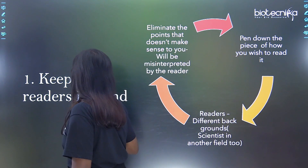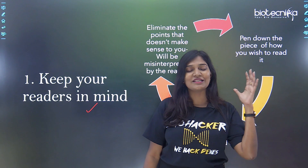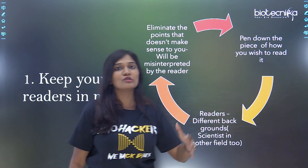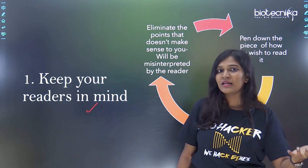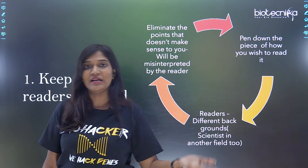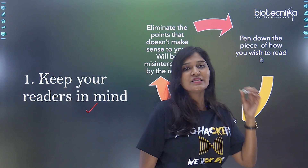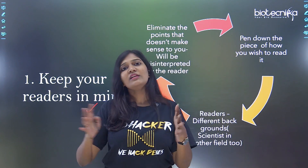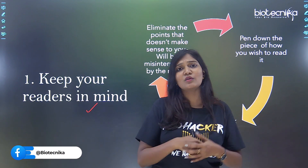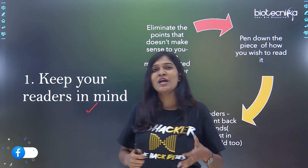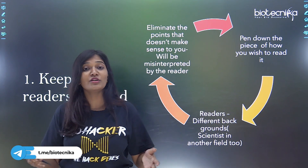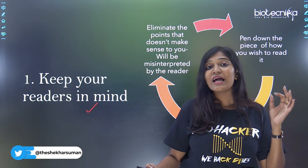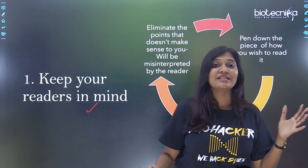The first important thing: keep your readers in mind. This is the most important thing when you start any kind of article. Suppose you're writing a review of literature or an article about a problem — a fungal infection, a viral outbreak, whatever you want to write about. The readers can be from a science background as well as a non-science background. During COVID-19, everybody wanted to know what SARS-CoV-2 was, so everybody started searching for it.